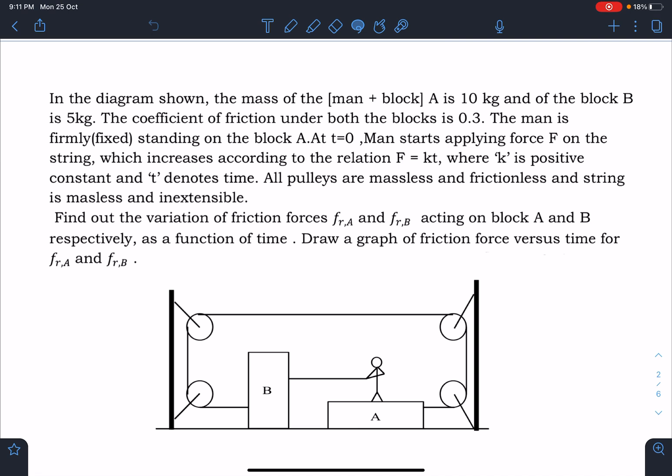Find out the variation of friction forces f_{r,A} and f_{r,B} acting on block A and B respectively as a function of time. Also draw the graph of friction force versus time for f_{r,A} and f_{r,B}. And we will do the tension in the string also as a function of time. So let us start here.